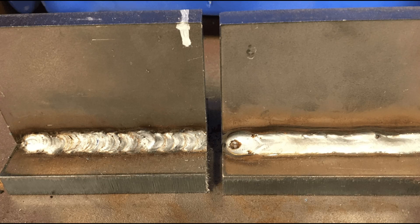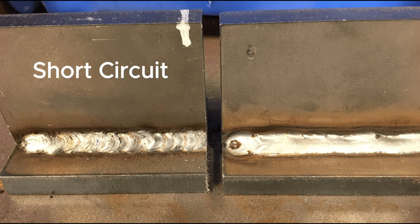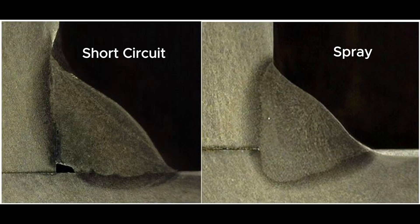To illustrate this, take a look at these two welds. On the left, we have a short-circuit weld on 3/8 inch plate, showing distinct ripples. On the right, a spray transfer weld. Both look good on the surface, right? But look underneath. The short-circuit weld on the left shows clear lack of fusion. The spray transfer weld on the right, however, has deep penetration, giving it almost double the load-bearing capacity. This highlights why following codes like D1.1 is critical for quality and safety.